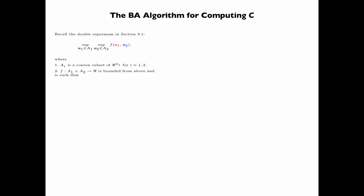F, a function from A1 times A2 to R, is bounded from above and is such that F is continuous and has continuous partial derivatives on A1 times A2.